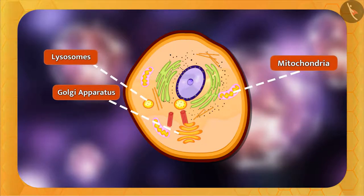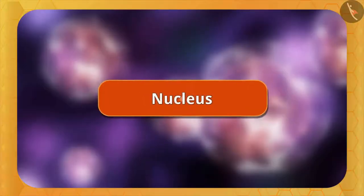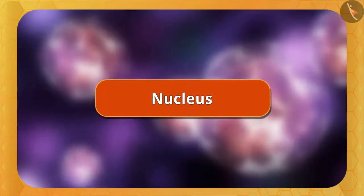Because of its jelly-like nature, all the cell organelles like mitochondria, Golgi apparatus, lysosomes, etc. float in it. The required proteins of these cell organelles swim in the cytoplasm and reach them. Apart from this, it also maintains the texture of the cell and all chemical reactions take place in the cytoplasm, which is responsible for the cell to survive.